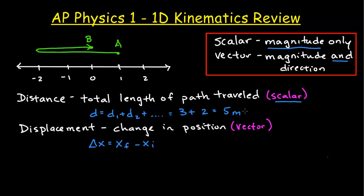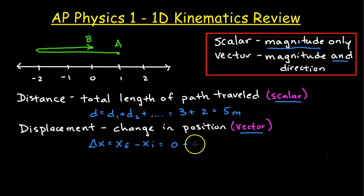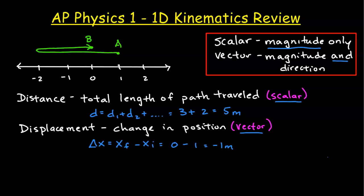Displacement is a change in position — it doesn't matter the path, and it's also a vector as well. There is a direction, so we're only interested in the final and initial position. At location B, the final position is zero, and the initial position is one, where location A is. So zero minus one is negative one meter. The negative means there is a direction — in this case, if we make right positive, the negative means the displacement is towards the left.